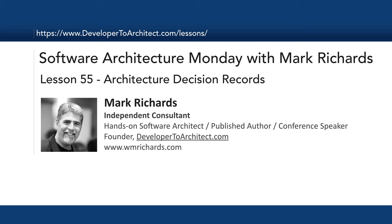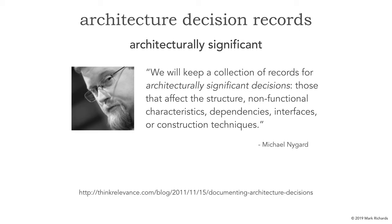Architecture decision records were coined by Michael Nygaard, and he says: we will keep a collection of records — architecture decision records — for architecturally significant decisions. Those are decisions that affect the structure (the overall style of architecture, whether we're doing microservices, microkernel, service-based, or layered), the non-functional characteristics (the ilities), dependencies between services or components, interfaces including APIs, or construction techniques which might include processes, procedures, or even the platform or language.